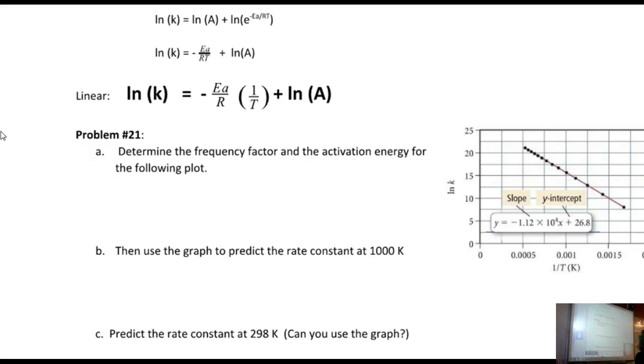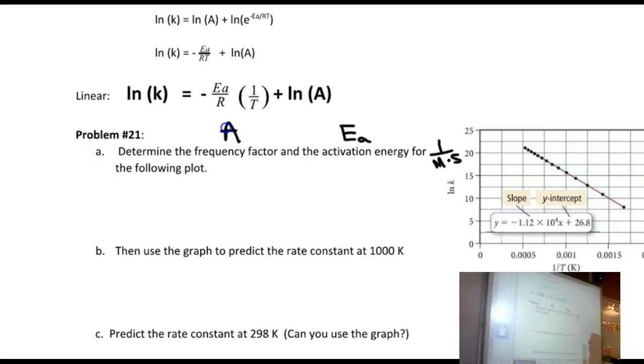So taking a look here, it says for problem 21, determine the frequency factor. Well, what's frequency factor? Looking back, that's A. We're trying to calculate A. And then what's the activation energy? Activation energy is called Ea for the following plot. So here's the plot. The units for k, by the way, are 1 over molarity times seconds. I think that'll play a role here. We definitely need to know that it's first order, actually, this reaction. And so if we look at our natural log of k versus 1 over T, we've got y, we've got m, we've got x, and then we've got b. And what we want to do is we want to first find the frequency factor. Well, the frequency factor is within the y-intercept.